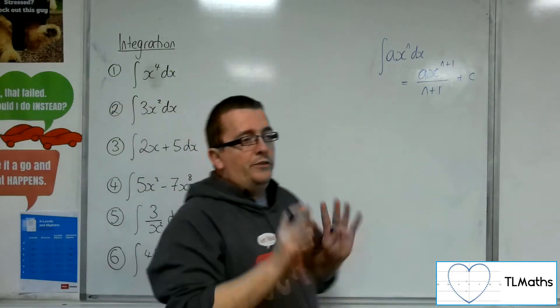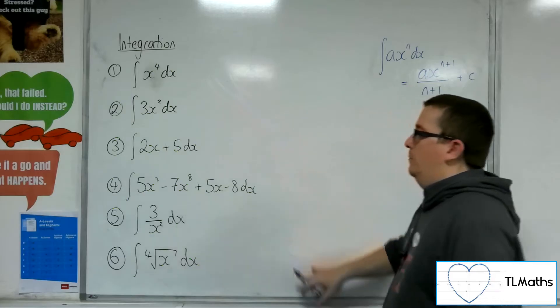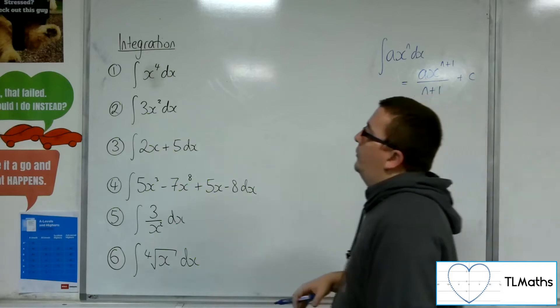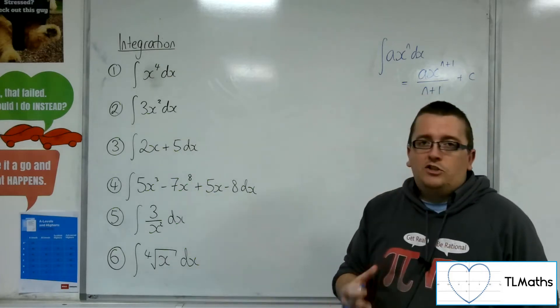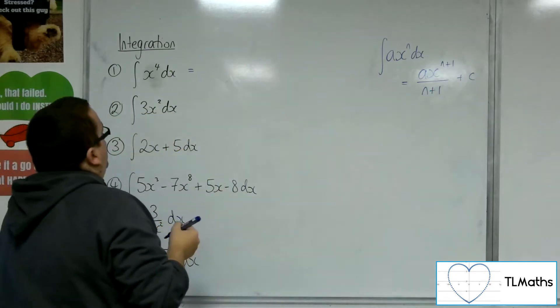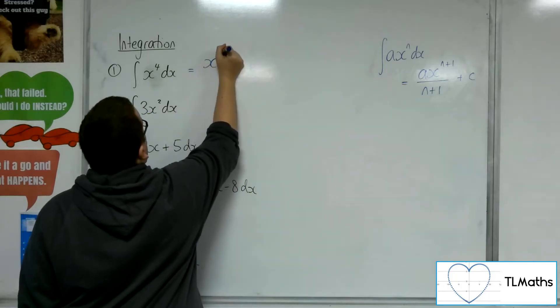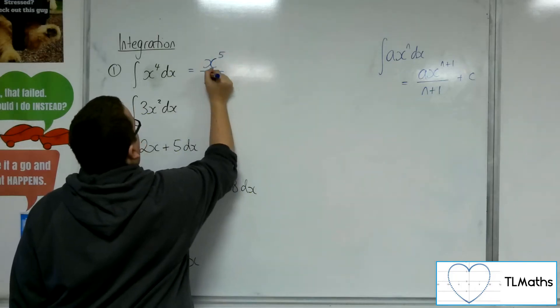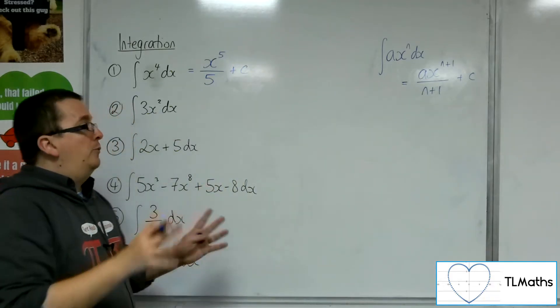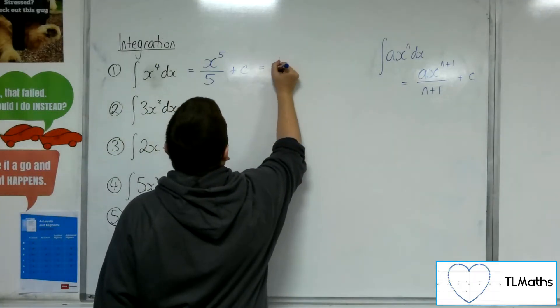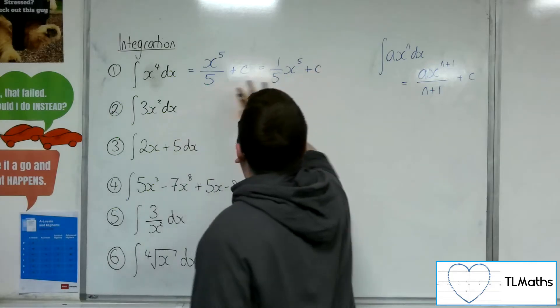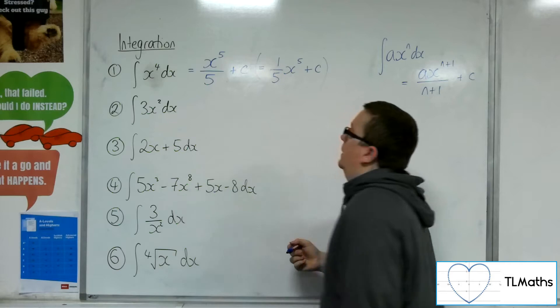So what we want to do is try this out with a few examples, 1 to 6. Let's start with number 1. We've got the integral of x to the 4 dx. So we're going to add 1 to the power, so x to the 5, and divide by the new power. And we've got that constant of integration. Now I can leave my answer like that, that's perfectly fine, or you can write that as 1 fifth of x to the 5 plus c. Either or, both of these are perfectly fine.